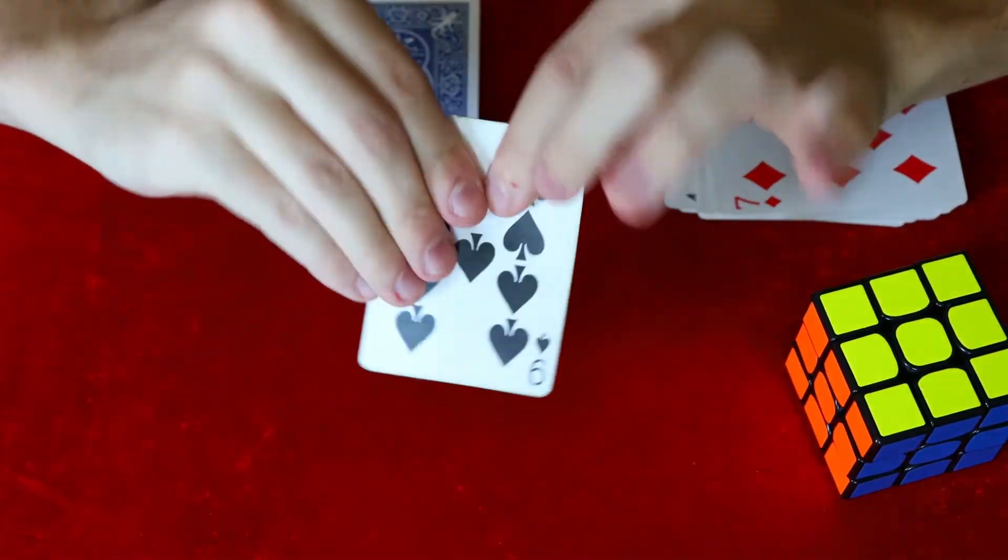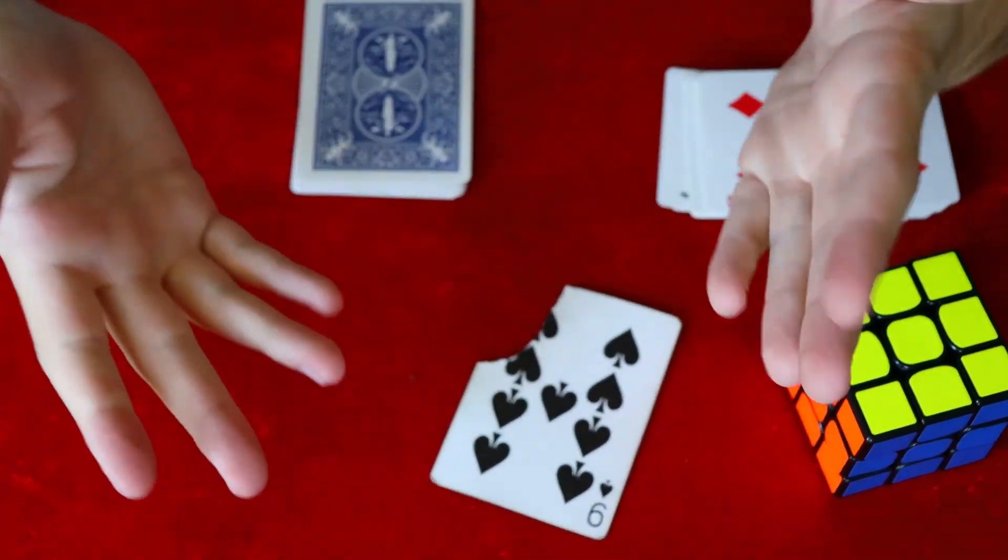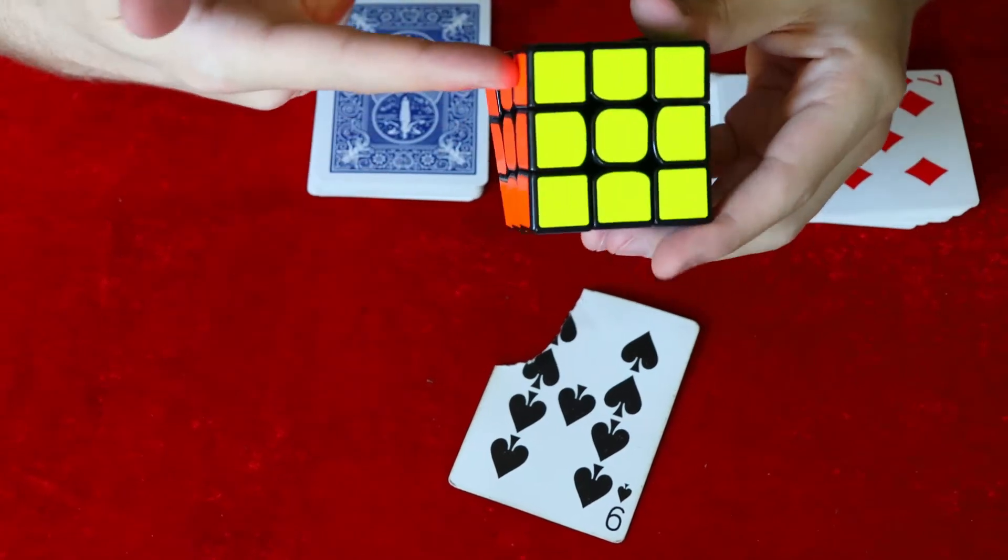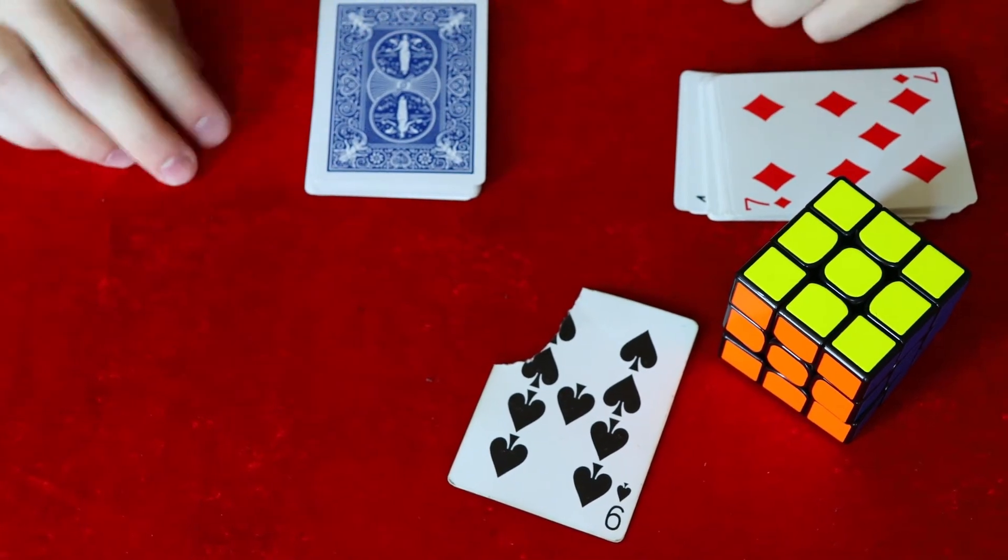And then you're just going to pretend to rip it. Boom. You pretend to rip it. Obviously there's nothing in your hand. So you can easily make that disappear. And that is basically the trick. And then the card is in the Rubik's Cube. Just got to take it apart and show it to them.